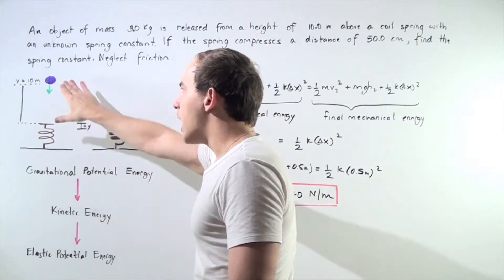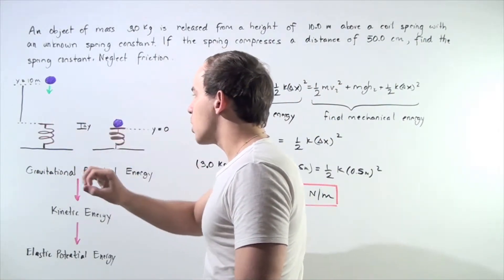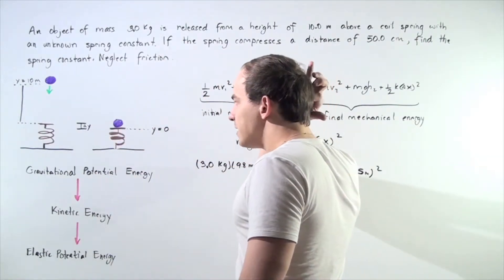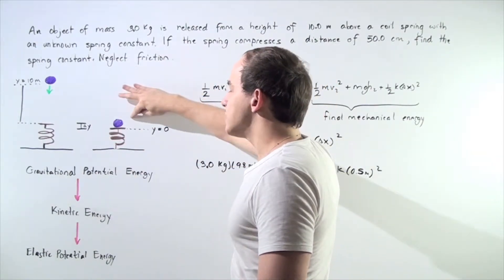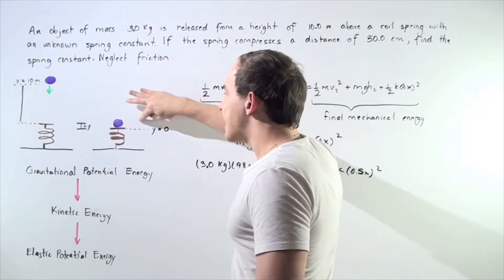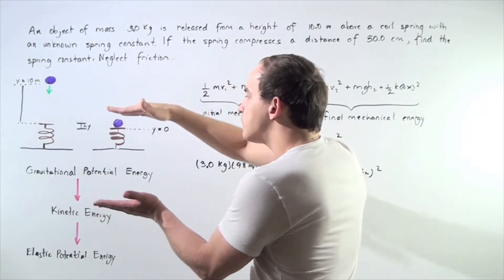Notice, initially, our object has a velocity of zero. And in the final condition, we also have a velocity of zero because that's exactly when the spring is fully compressed.